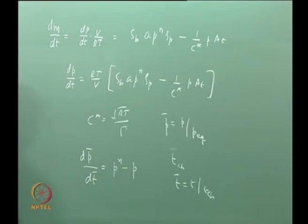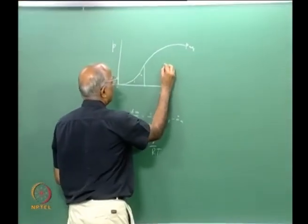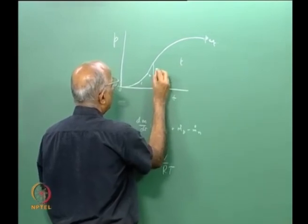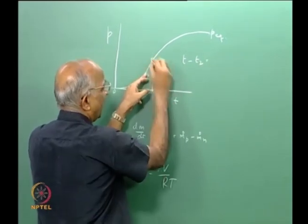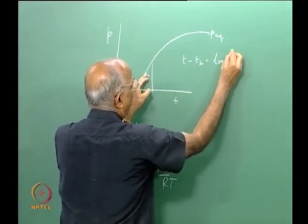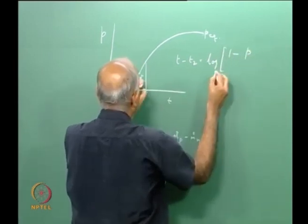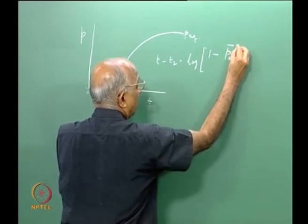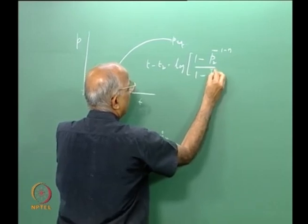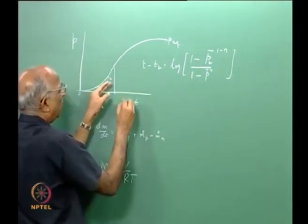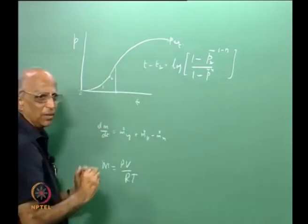We integrated this expression and obtained the pressure at any time between event 2 and onwards as: ln(1 − p̄₂^(1−n)) − ln(1 − p̄^(1−n)), giving the time for the ignition transient. We followed the same logic to find the variation of pressure during tail-off — how pressure decays after all the propellant is consumed.